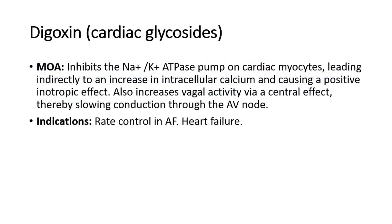Another anti-arrhythmic drug is cardiac glycoside; an example of this class is digoxin. Digoxin inhibits the sodium-potassium ATPase pump on cardiac myocytes, leading indirectly to an increase in intracellular calcium and causing a positive inotropic effect. It also increases vagal activity via a central effect, thereby slowing conduction through the AV node. Digoxin is indicated in rate control in atrial fibrillation and heart failure.